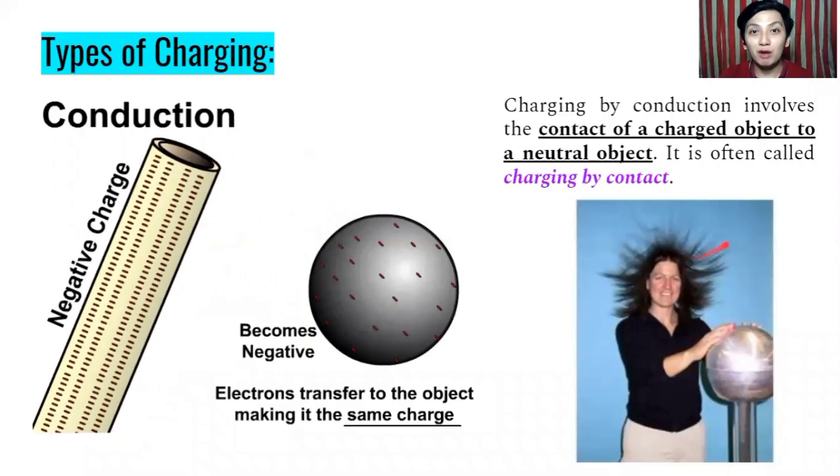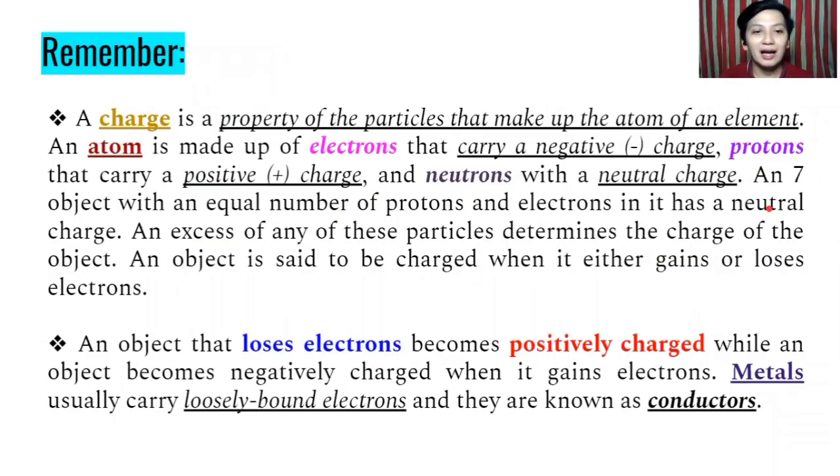And those are the three types of charging in this topic. So always remember that a charge is a property of particles that make up the atom of an element. An atom is made up of electrons that carries negative charge, protons positive charge, neutrons with neutral charge. Remember if an object has an equal number of protons and electrons, it has a neutral charge. If it gains electrons, it will become negatively charged. If it loses electrons, it will become positively charged. So an object is said to be charged when it either gains or loses its electrons. An object that loses electrons becomes positively charged, while the object becomes negatively charged when it gains electrons.